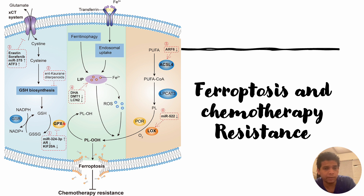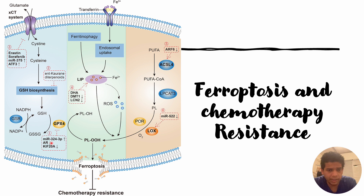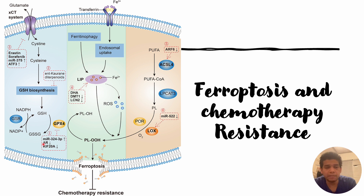Starting with the first pathway — inhibiting GPX4 — some inhibitors are mentioned in the figure. The upregulation of microRNA-324-3p leads to inhibition of GPX4. Simultaneously, downregulation of AR and KIF-20A also leads to inhibition of GPX4. Any of these inhibitors can be used to inhibit GPX4.